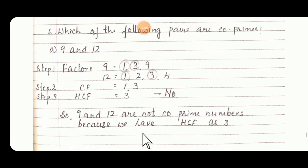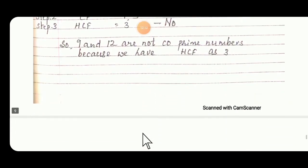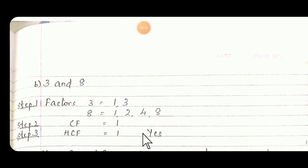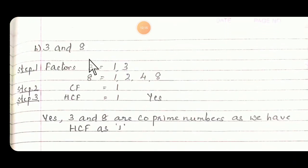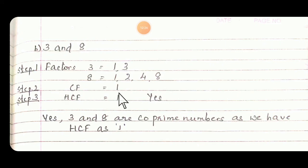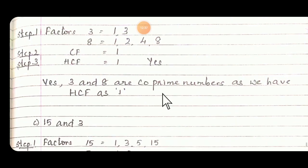B: 3 and 8. Factors of 3 are 1 and 3. Factors of 8 are 1, 2, 4, and 8. So common factor is 1 here — other numbers are not common. So common factor is 1 and the HCF will be 1. So what will that number be called? Co-prime number. Yes — 3 and 8 are co-prime numbers as we have HCF as 1.